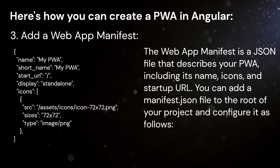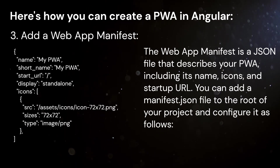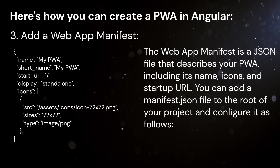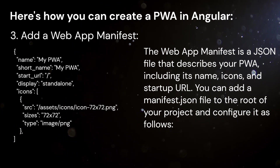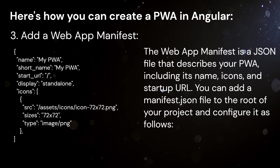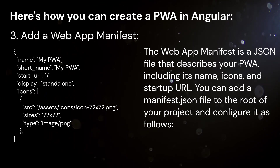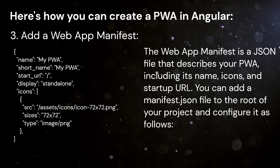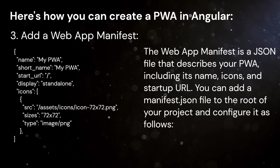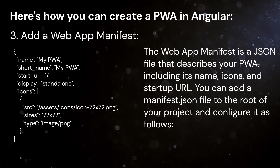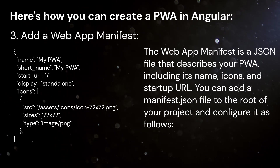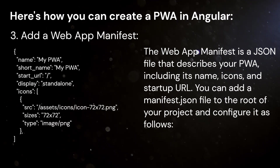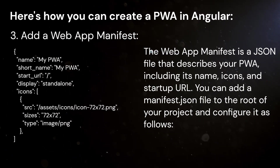Third, add a web app manifest. The web app manifest is a JSON file that describes your PWA, including its name, icons, and startup URL. You can add a manifest.json file to the root of your project and configure it as follows.